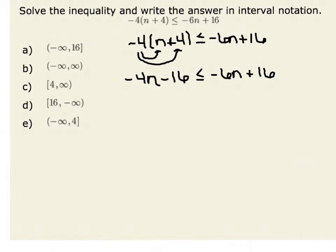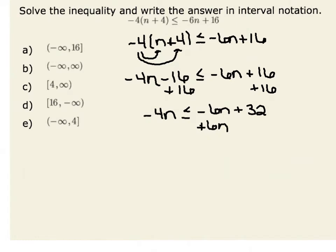My next step would be to isolate my variable on one side of the inequality. I could add 16 to both sides of my inequality, resulting in negative 4n is less than or equal to negative 6n plus 32. Now I could add 6n to both sides of my inequality, giving me 2n is less than or equal to 32.